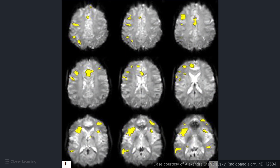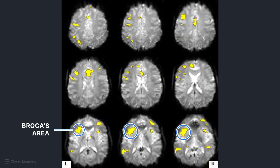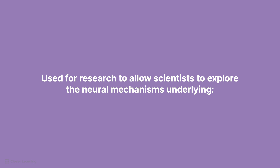During an fMRI scan, an initial baseline scan may be taken to provide a baseline image of the brain's structure. As the brain engages in various tasks, such as speaking, the scanner takes rapid sequential images, capturing changes in blood oxygenation levels across different brain regions. As seen in the image, when the patient speaks, Broca's area, which is responsible for speech, lights up.